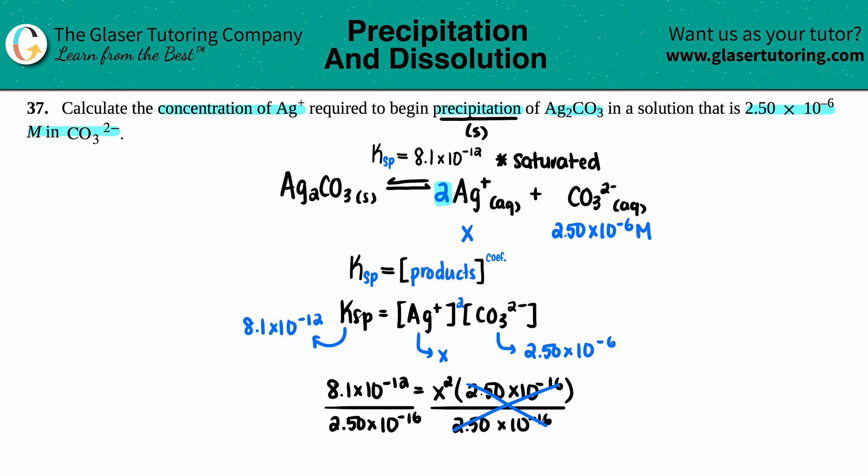8.1×10⁻¹² divided by 2.5×10⁻⁶, I get 32,400, and that equals x². If I take the square root of both sides, I get x equals 180. Wait a minute, I'm looking at this number and this does not look like a molarity. Let me see if I made a mistake. Oh, I caught my mistake.